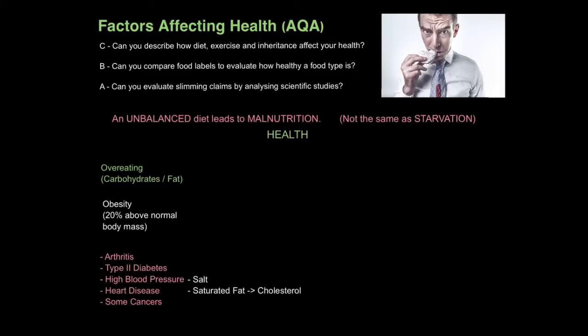Moving on to aim one, one of the factors that affects our health is overeating, particularly when we're focusing on carbohydrates and fats, which can lead directly to obesity — when we're about 20% above our normal recommended body mass. Obesity is linked to a whole host of problems, such as arthritis, when we develop swollen, painful joints, and type 2 diabetes, when our organs stop responding to a hormone called insulin, preventing us from controlling our blood sugar level.